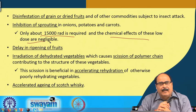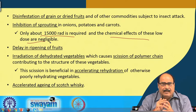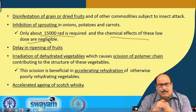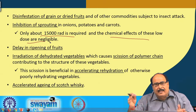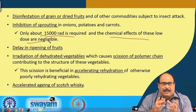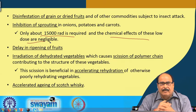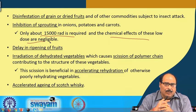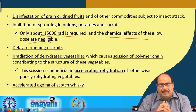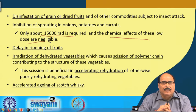Another very interesting effect is the delay in ripening of fruits. Fruits can be exposed to a required dose of radiation to delay ripening and extend shelf life. In fact, many fruits like mango are commercially treated by irradiation and then shipped or transported to other countries.